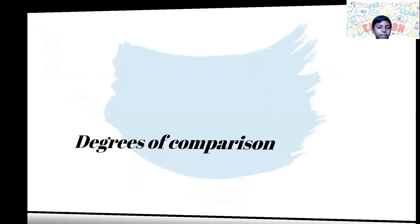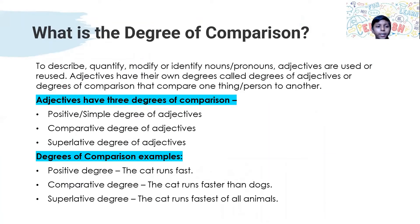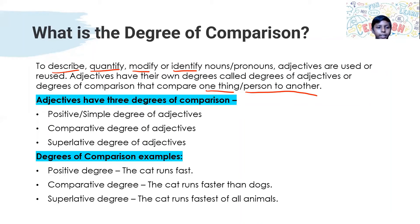Degrees of comparison. What are the degrees of comparison? To describe, quantify, modify, or identify nouns or pronouns, adjectives are used. Adjectives have their own degrees called degrees of adjectives or degrees of comparison, that compare one thing or person to another. Adjectives have three degrees of comparison: positive or simple degree, comparative degree, and superlative form.